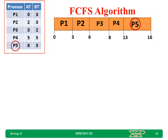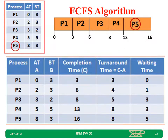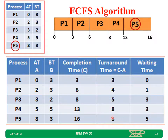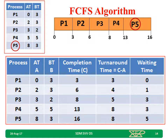P5 is allocated next. CPU is given at 13 milliseconds. It takes 3 milliseconds to complete, so 13 plus 3 equals 16. Turnaround time: completion 16 minus arrival 8 equals 8. Waiting time: CPU given at 13, arrived at 8, so 13 minus 8 equals 5 milliseconds.